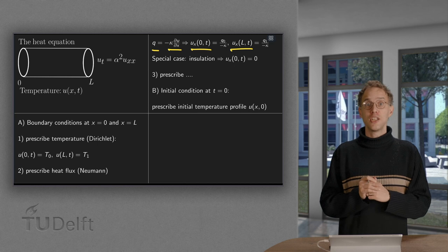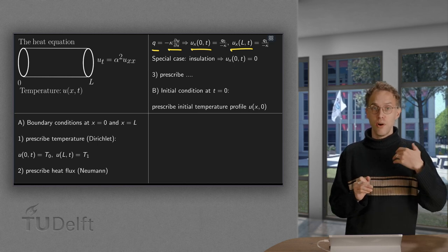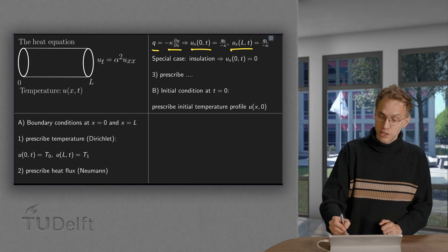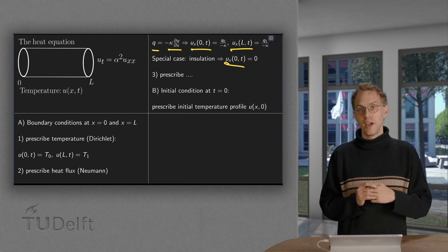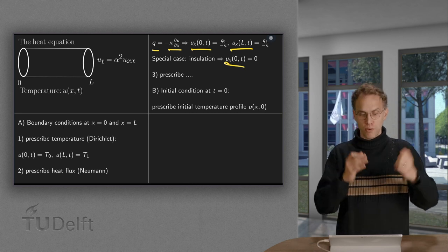Special case: we say there is no inflow. No inflow or insulation means ux equals 0 at 0 and also, of course, at L.